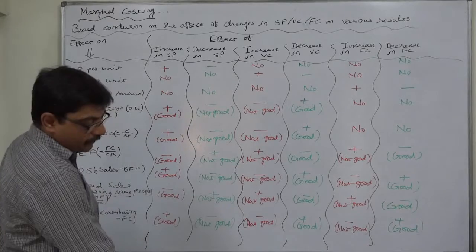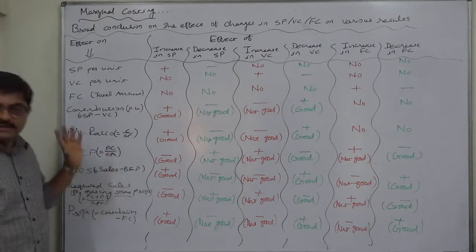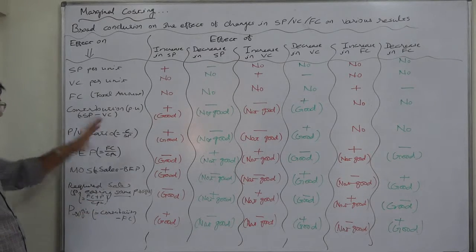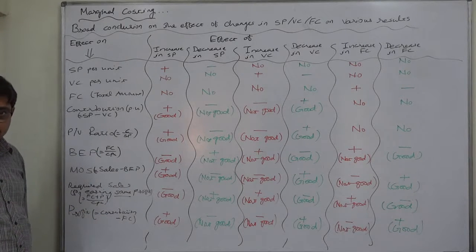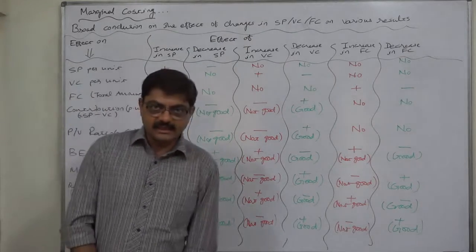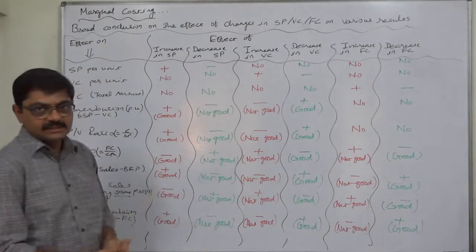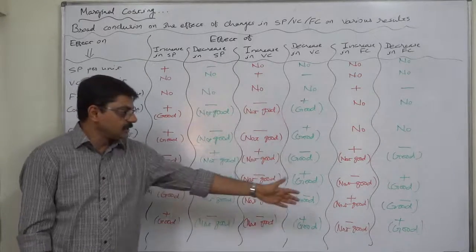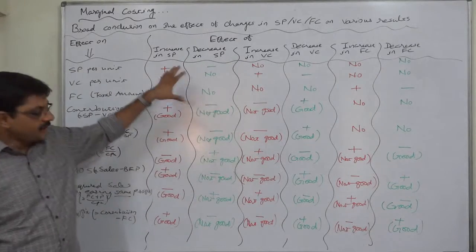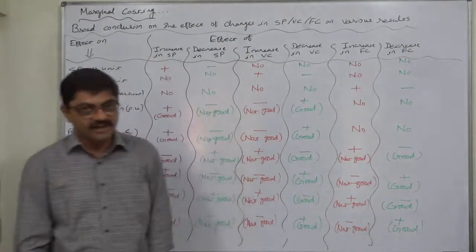This is the summary showing broad conclusions of changes in selling price, variable cost, and fixed cost on various important measures in marginal costing — like contribution per unit, PV ratio, break-even point quantity and sales value, margin of safety, sales to earn a specific profit, and profit. I hope this will be very useful, but I insist that before referring to this chart, please go through all seven previous lectures. Learn the calculations, and when referring to this table, review it column-wise, remembering lecture numbers 2, 3, 4, 5, 6, and 7. Best of luck. Thank you very much.